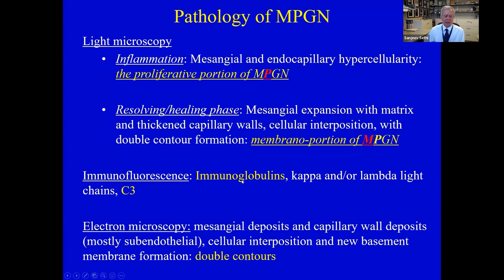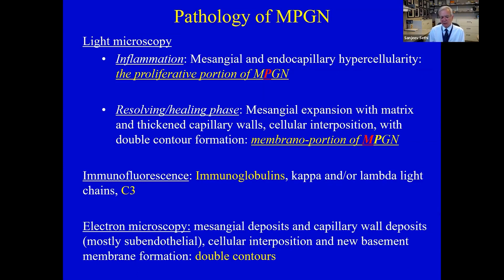Looking at older classic textbooks — even good ones like Heptinstall's — the immunofluorescence description from the early 2000s simply stated that IF was positive for immunoglobulins with or without C3, or that C3 is often seen. That was all the importance given to immunofluorescence microscopy, while a lot of detail went into electron microscopy. On EM, the bottom line was that deposits were present in the mesangium and along the capillary walls — mostly subendothelial, but also some subepithelial deposits — and critically, double contours were required for MPGN.